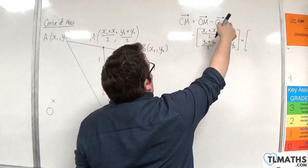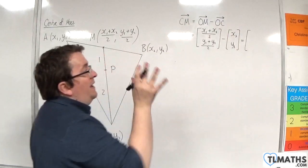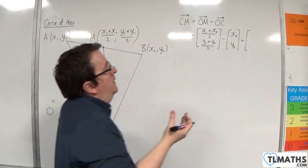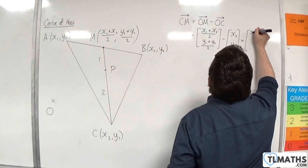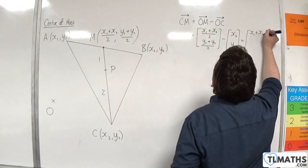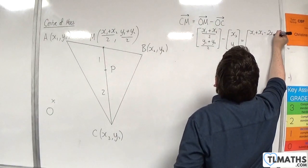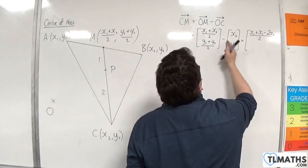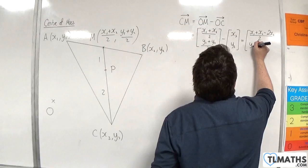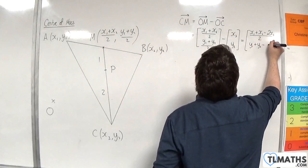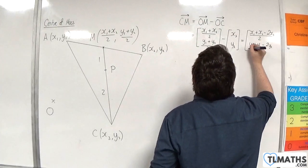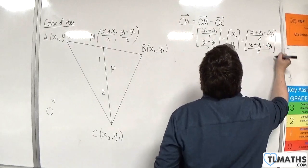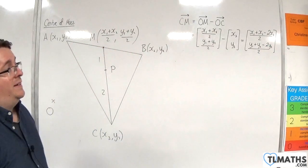Now, X1 plus X2 over 2, take away X3. I can combine that into a single fraction. And I could write that as X1 plus X2, take away two lots of X3 over 2. And I could do a similar thing for the Ys, so Y1 plus Y2, take away 2Y3 over 2. That's the vector CM.